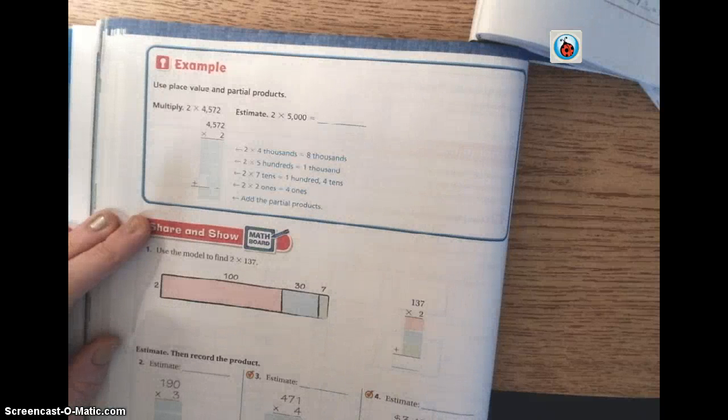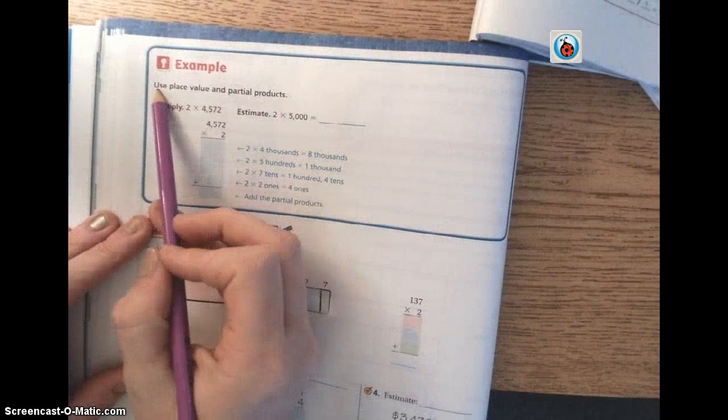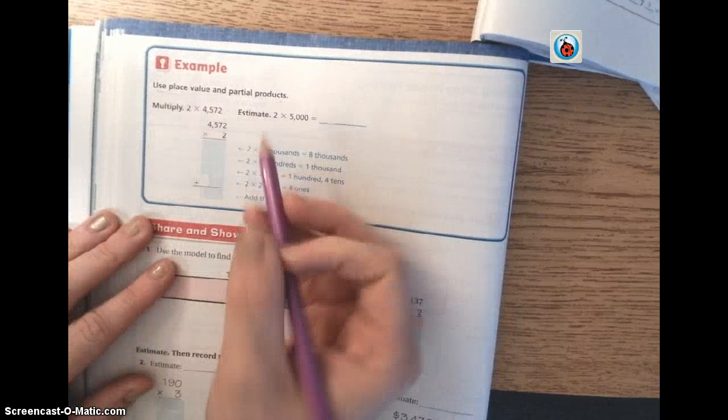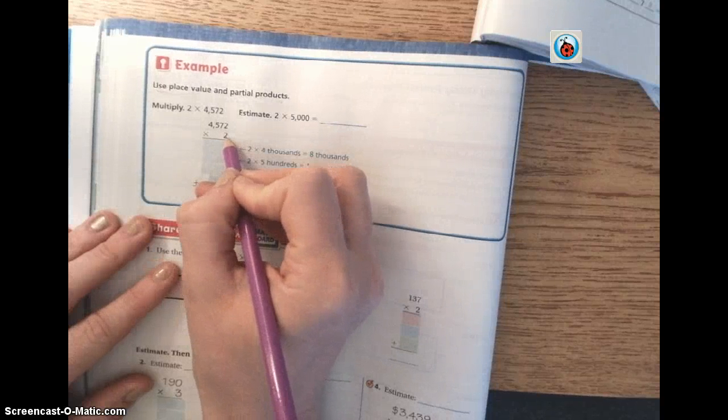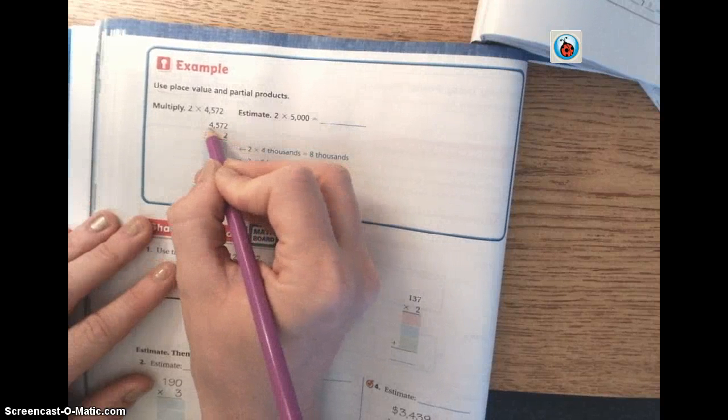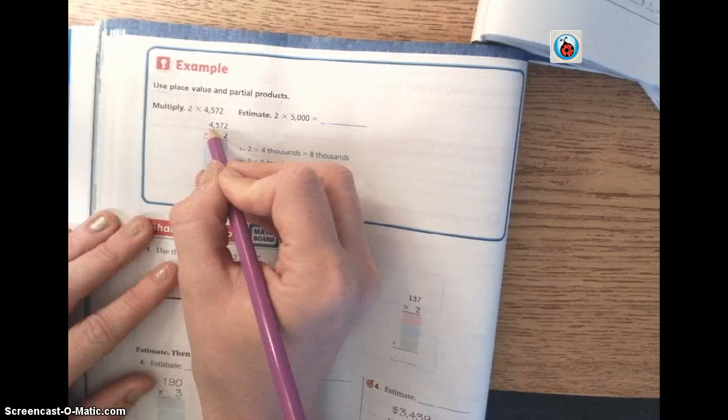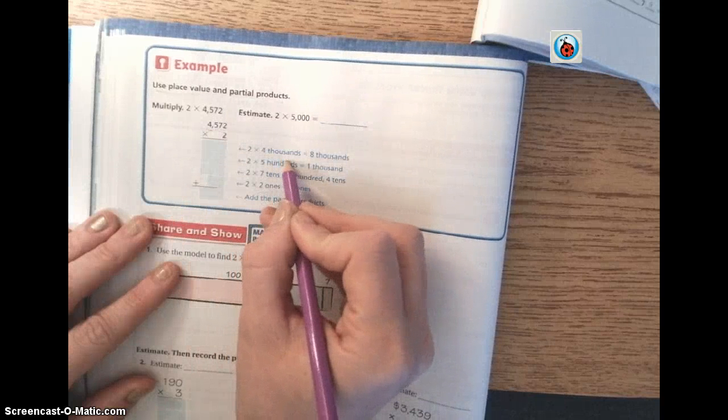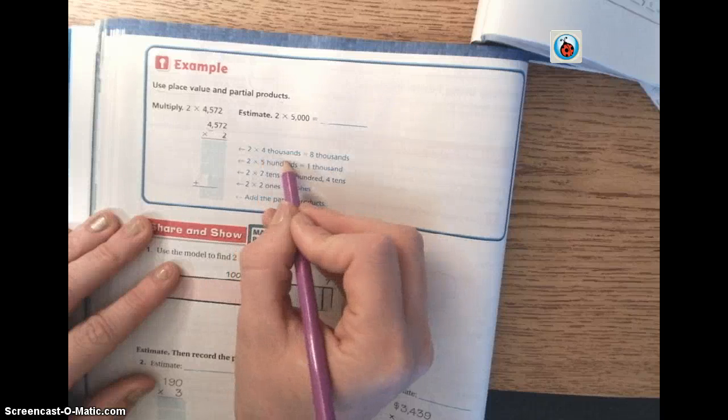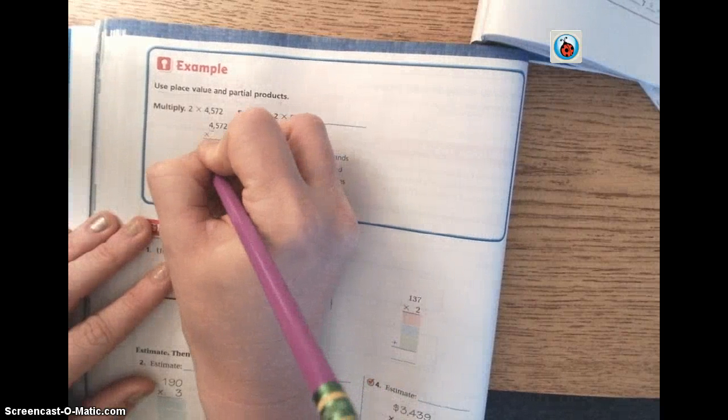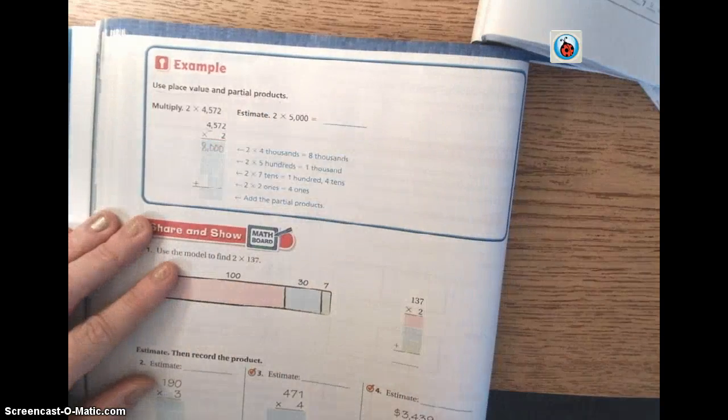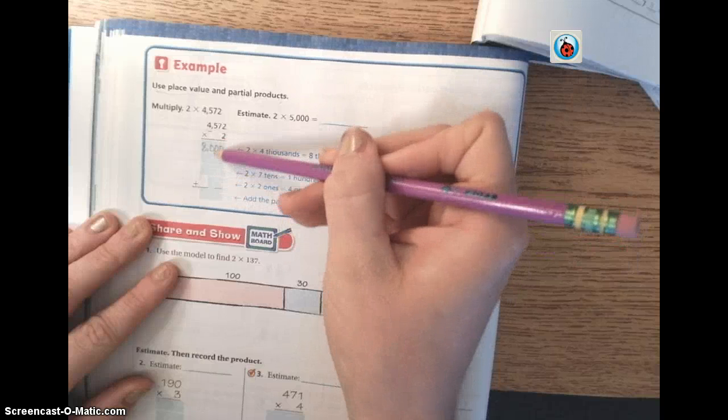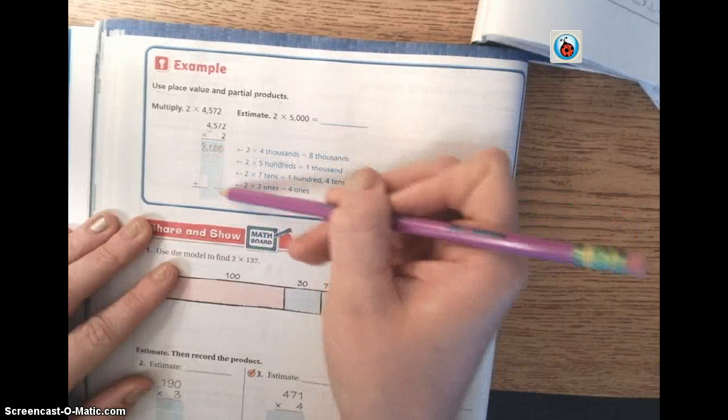Turn the page over to page 100. It's asking you to use place value and partial product. So we're once again going to kind of work backwards. We're going to multiply by 2. But we're going to multiply 2 times the thousands place. So we're going to do 2 times 4 thousands, because that's how many thousands are in the thousands place. And we know that 2 times 4 thousands is actually 8,000. So write 8,000 right there. We're just going to find all of our answers here, and then we're going to add them up to get the product.